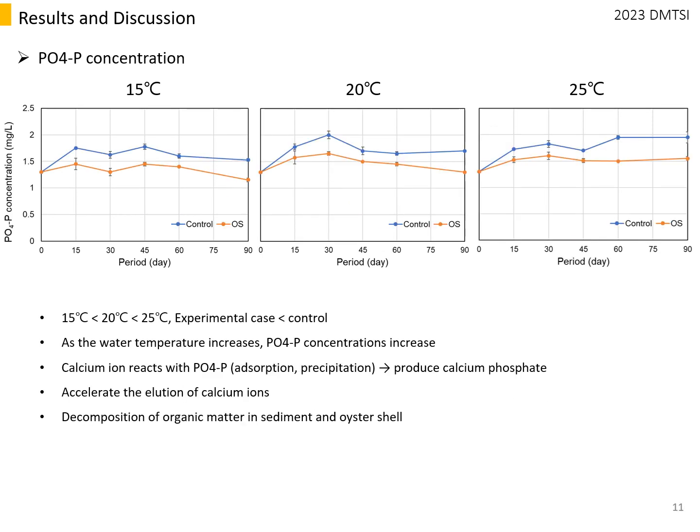The following presents the phosphate concentration data. The phosphate concentration of experimental cases was always lower than that of the control and tended to increase as temperature increased. There was no significant difference in phosphate concentration by water temperature in the experimental cases, but phosphate absorption by oyster shell can be seen through comparison with the control.